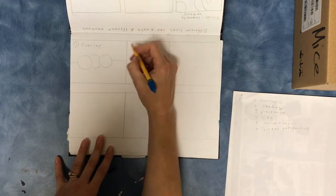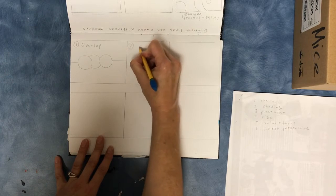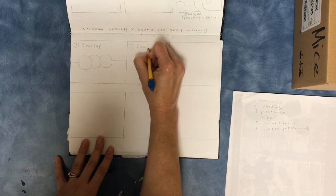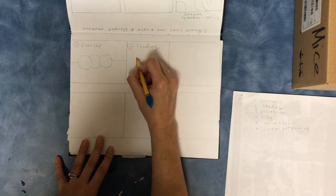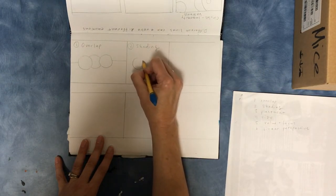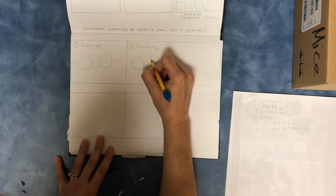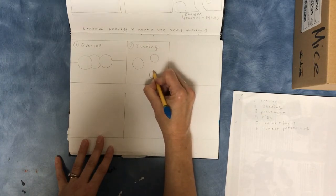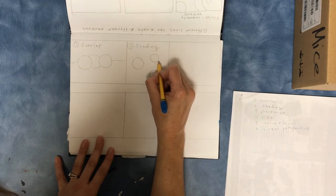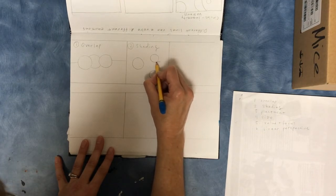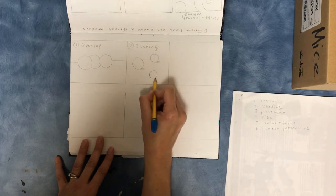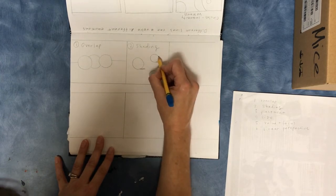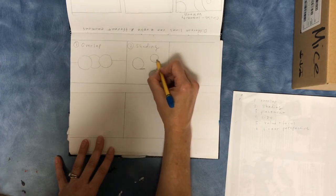Number two is shading. So you're just going to draw a couple shapes, and then you're just going to add a little shadow underneath. And then you're going to add a little bit of shading on one side.